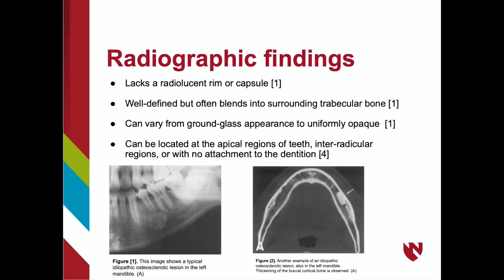Radiographically, idiopathic osteosclerosis is seen as a well-defined lesion, although it may blend in with surrounding trabecular bone due to its lack of a radiolucent rim or capsule. It is usually a uniformly radio-opaque lesion, but it can have a ground-glass appearance. Idiopathic osteosclerosis may be seen in the apical regions of teeth, interradicular regions, or with no attachment at all.